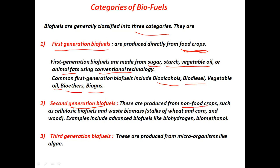Second generation biofuels are produced from non-food crops — those not used as food. For example, cellulosic biofuels are derived from cellulose, meaning the leaves, stems, and other fibrous parts of a plant, as well as waste biomass like waste from wheat and corn. The waste of these plants can be used to produce fuel.